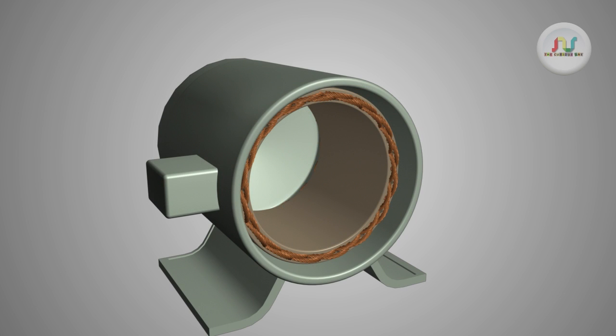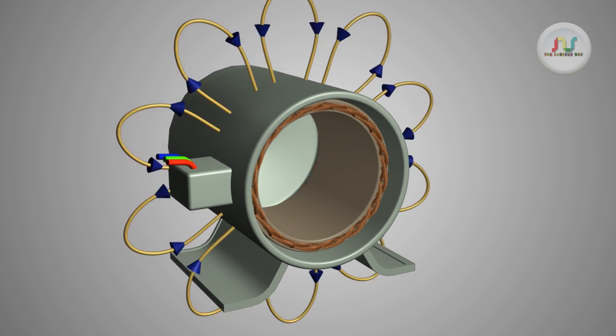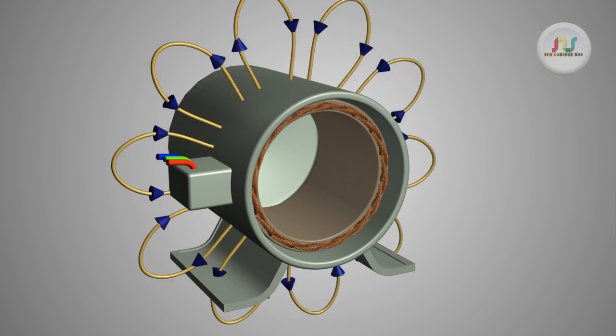The stator is wound with a three-phase winding for a specific number of poles equal to the rotor poles. The field coil is excited by three-phase supply. This will produce a revolving magnetic field which rotates at synchronized speed.